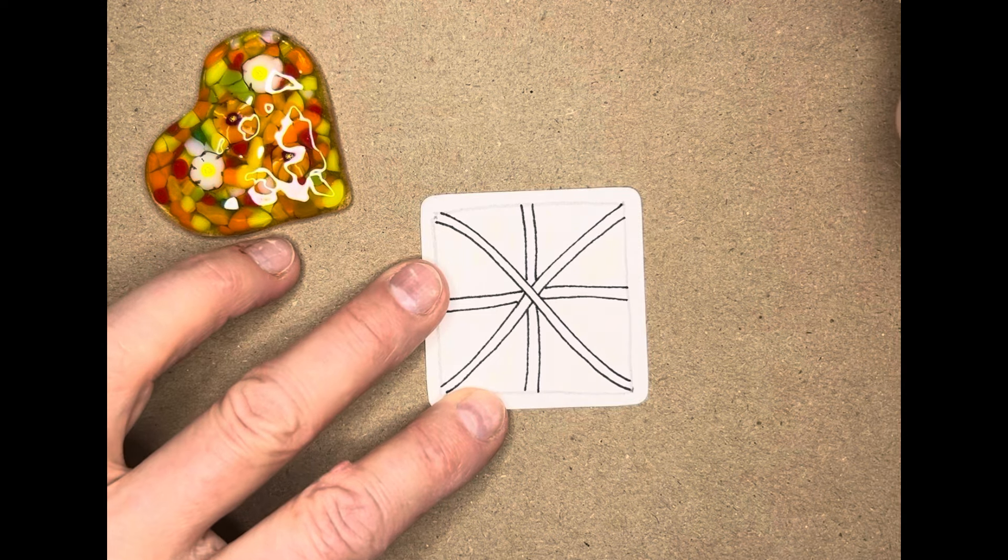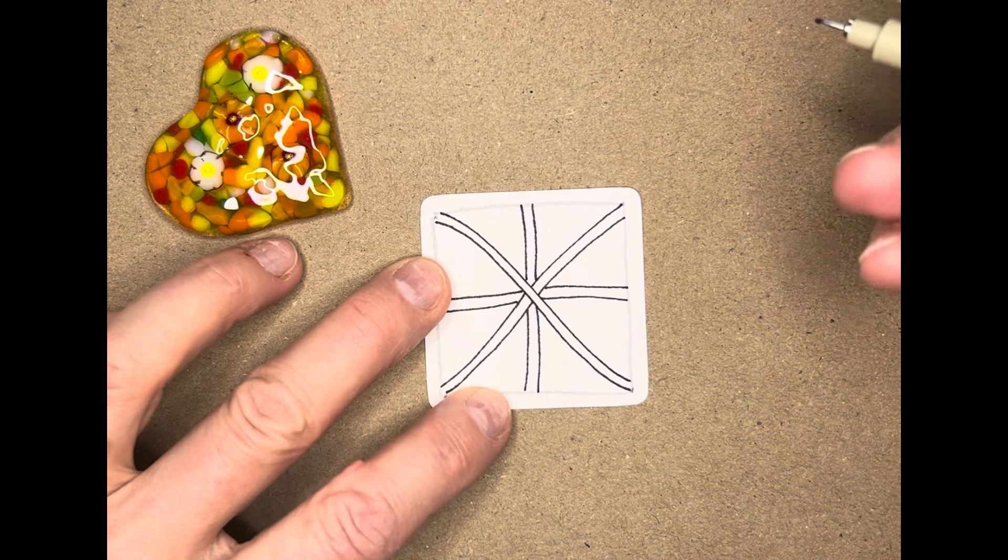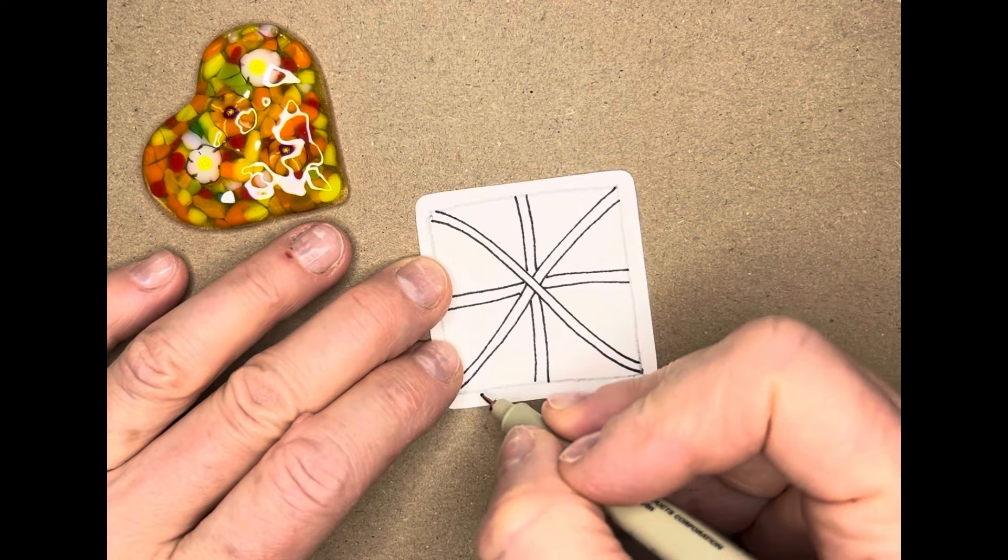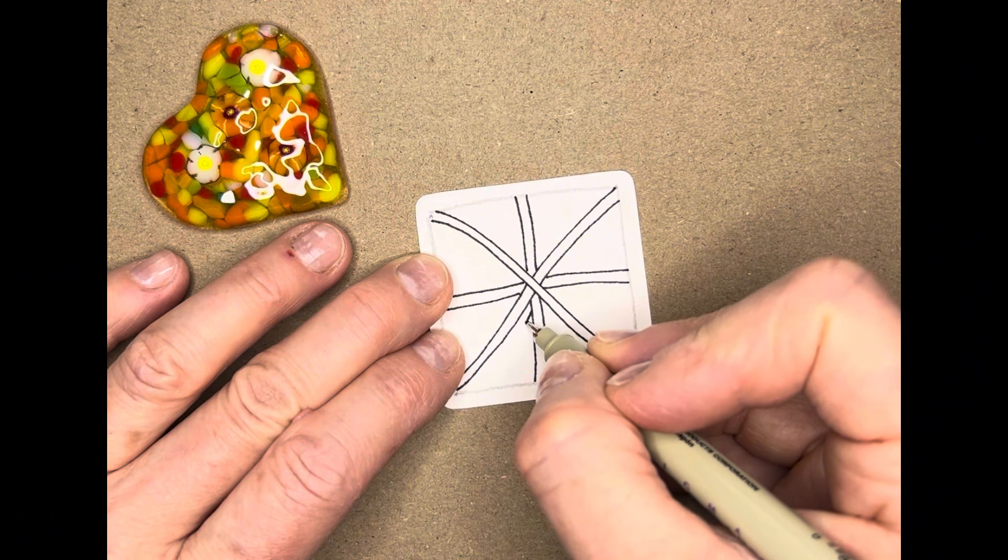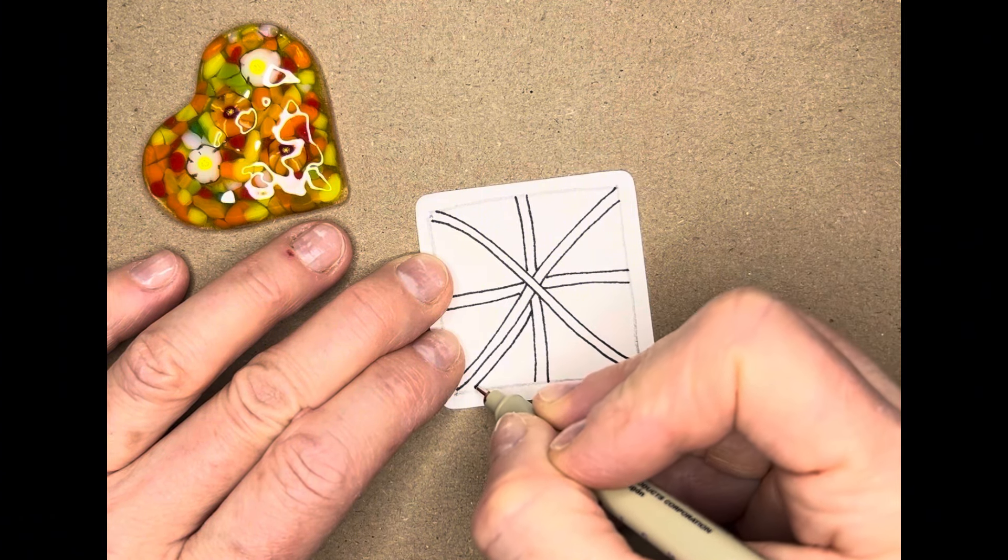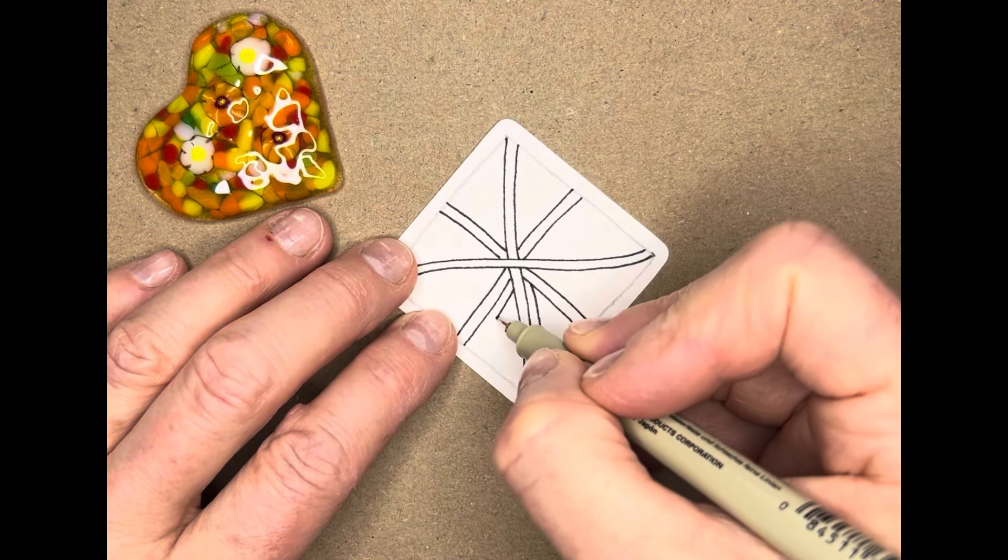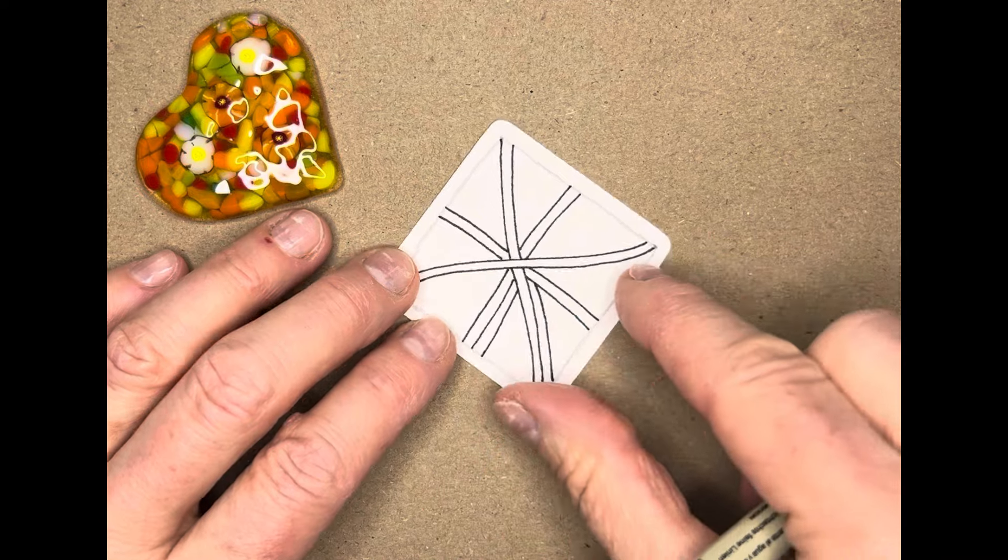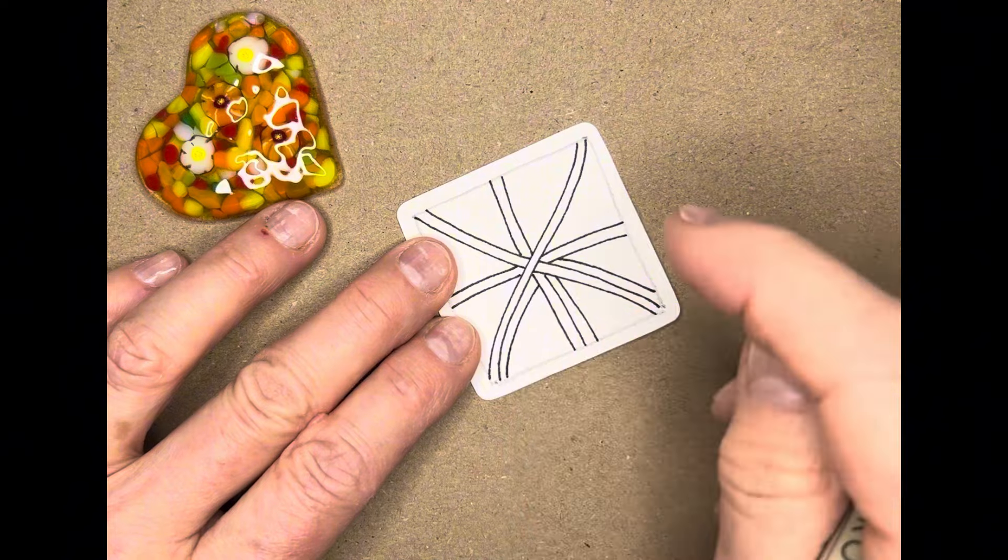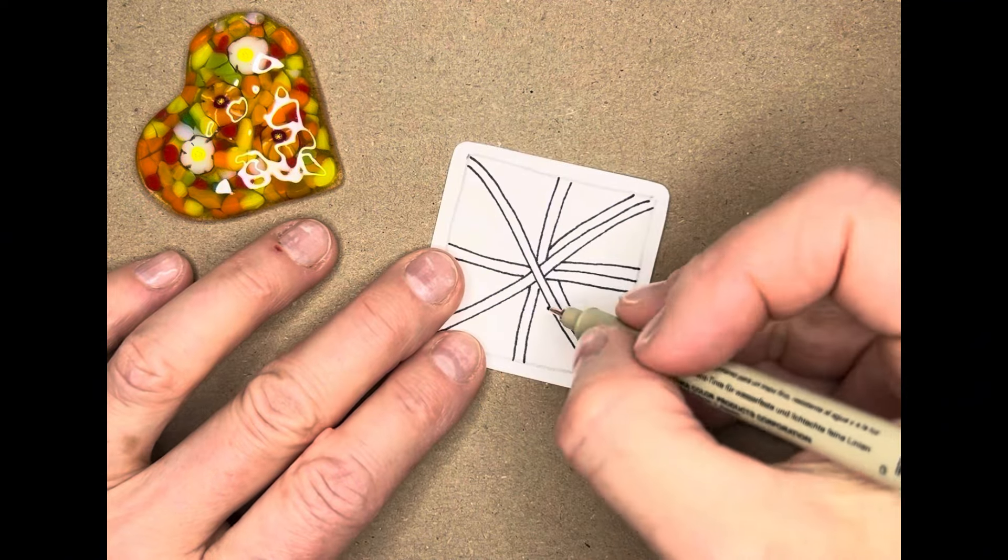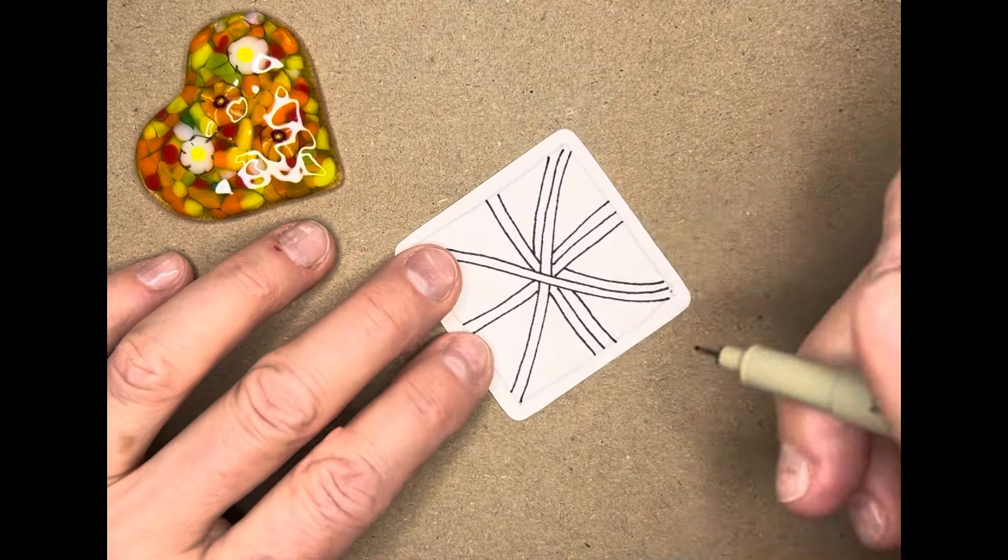So you can see I've added those four different lines crossing over. Now we've done that, I am going to aura inside each section. So let's start off with this section. And I'm going to draw one line here. And I'm going to do another line here. It doesn't really matter what side you start. But you're going to stay for this section on the same side as you turn your tile.